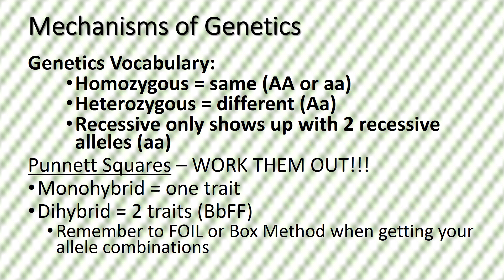In genetics, there are some key vocabulary terms to remember. A homozygous genotype is when you have two alleles that are the same, such as capital A capital A, or lowercase a lowercase a. If you have a heterozygous genotype, then your alleles are going to be different: capital A, lowercase a. The only way that a recessive trait will show is if you have two recessive alleles, or it is homozygous recessive, such as little a little a.